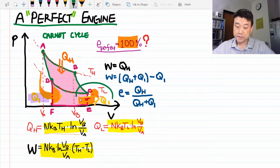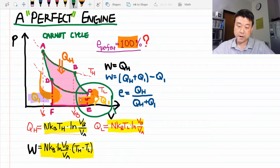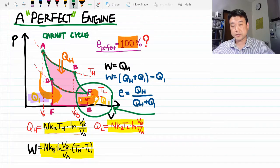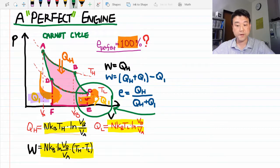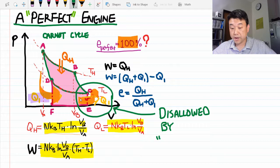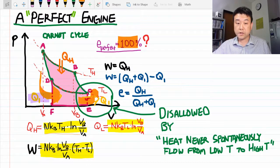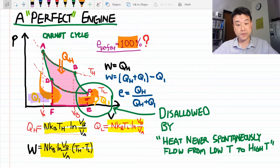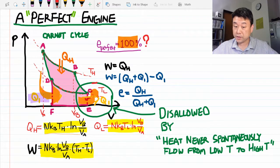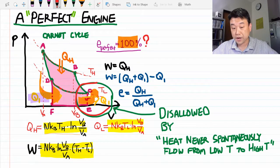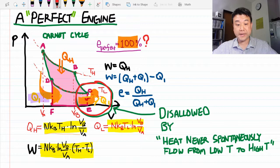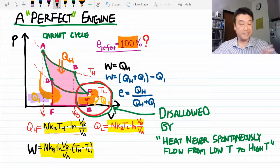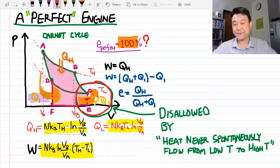Now, unfortunately, this process here is what is forbidden by the Clausius statement of the second law of thermodynamics. Heat never spontaneously flows from low temperature to high temperature. This is one illustration of why Clausius statement is equivalent to the Kelvin statement. Because if you could imagine it could possibly flow from low temperature to high temperature, then that's all we need to make a 100% efficient, perfect engine. But that's not true, so we can't make 100% perfect engine.